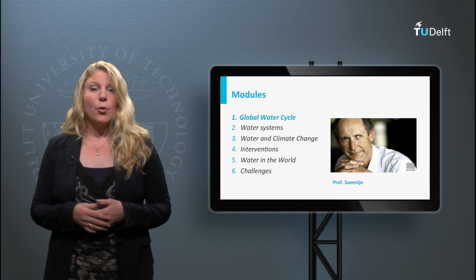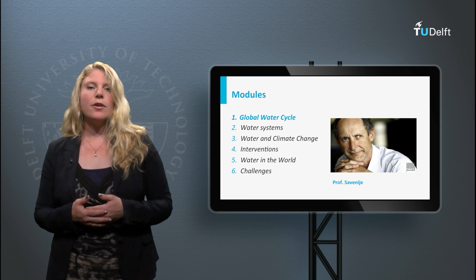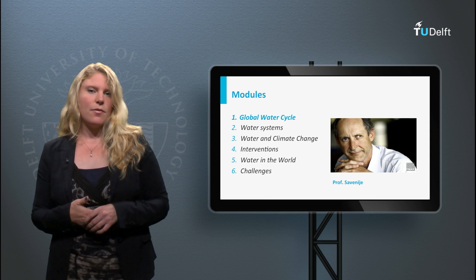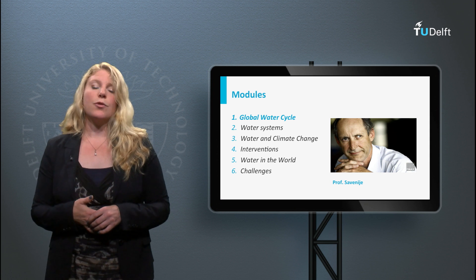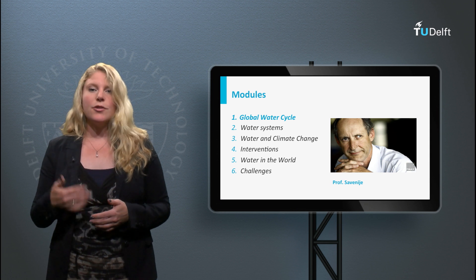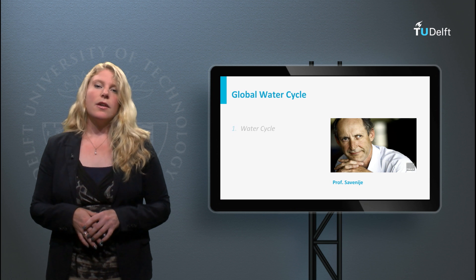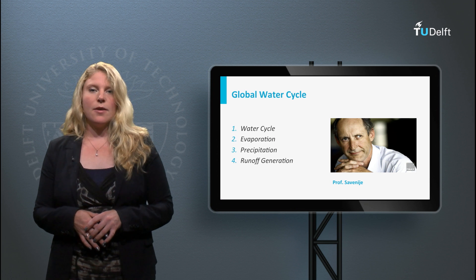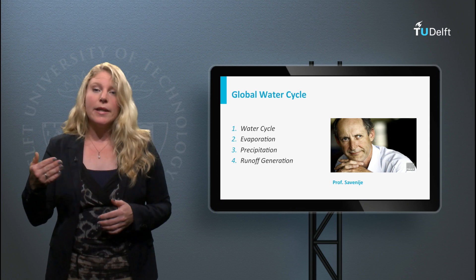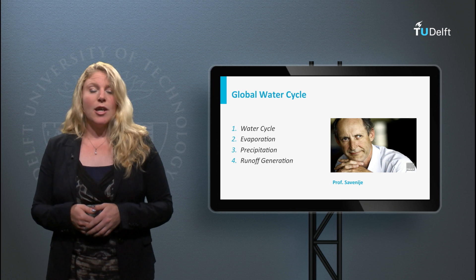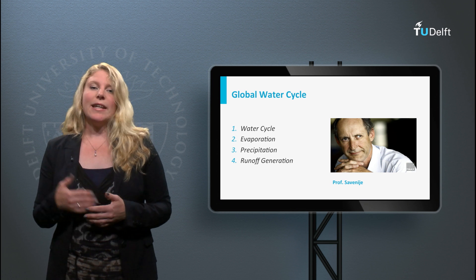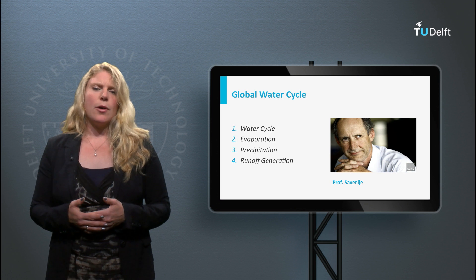Professor Savanijen will describe how water moves over and through the earth. He will show that global hydrology is extremely relevant for the analysis of human impacts on our planet, and that the limits of the hydrological system appear at different scales. The coming week, Professor Savanijen will first show you the global water cycle, explain the importance and types of evaporation, explain how precipitation is formed, and at the end of the week tell you more about the runoff processes.